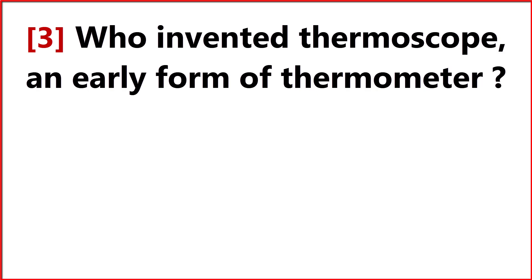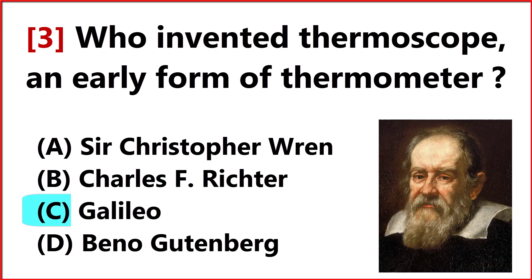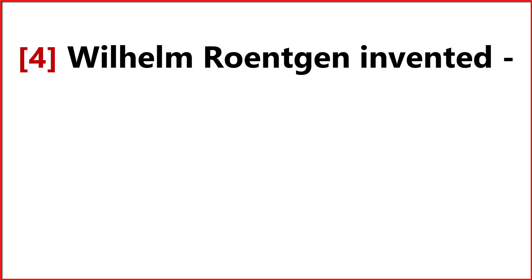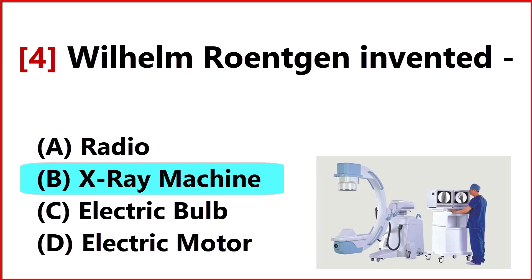Who invented the thermoscope, an early form of thermometer? Answer Option C: Galileo. Wilhelm Rontgen invented Answer Option B: the X-ray machine.